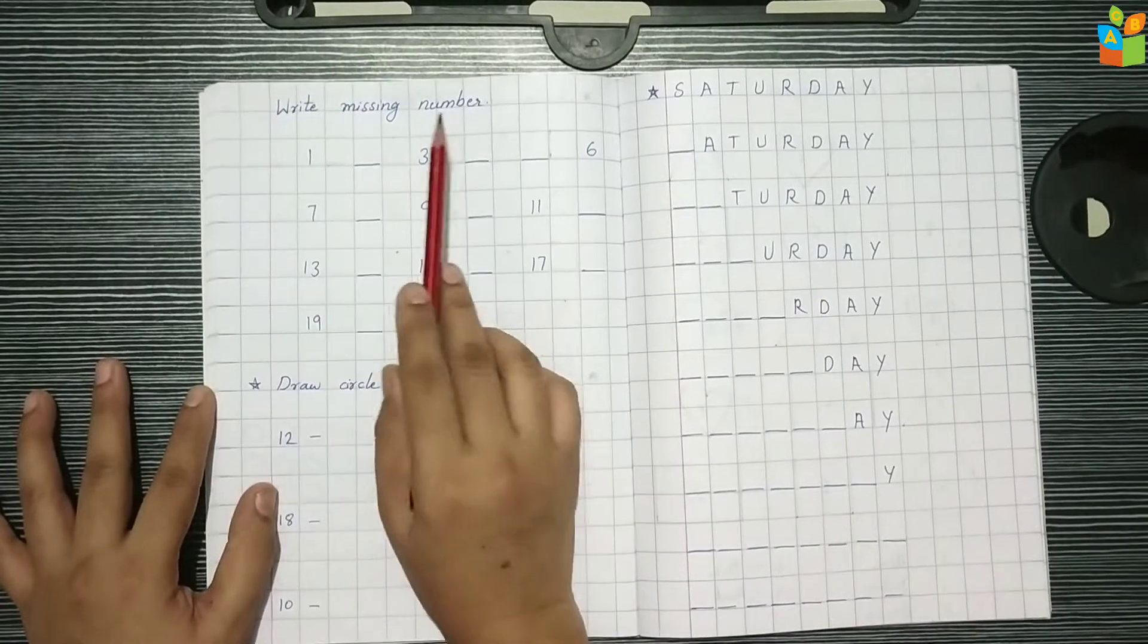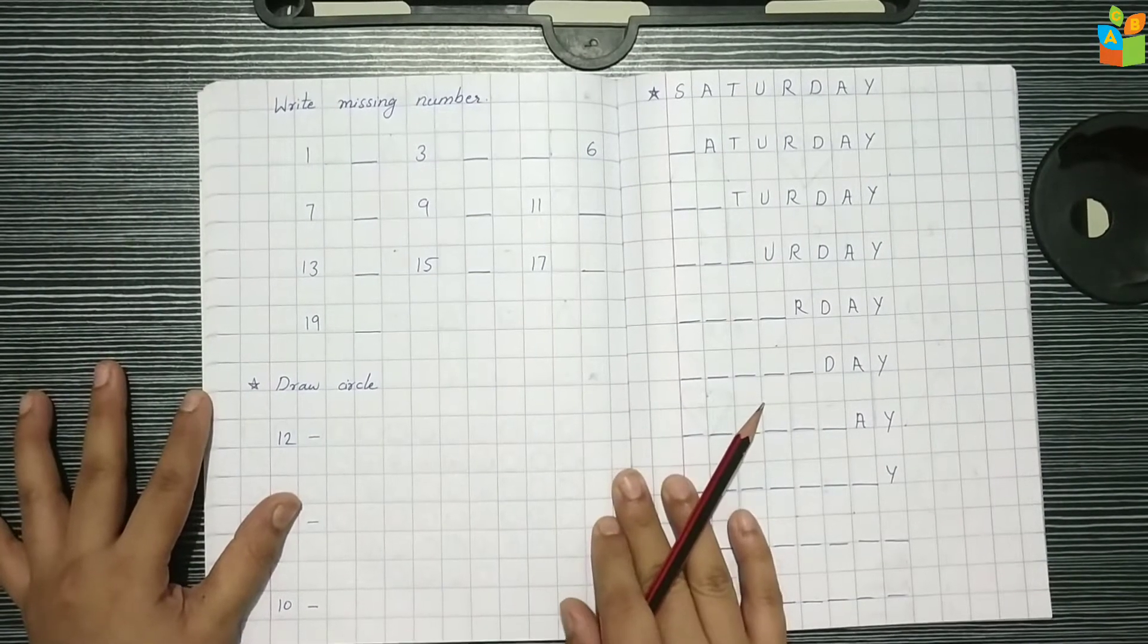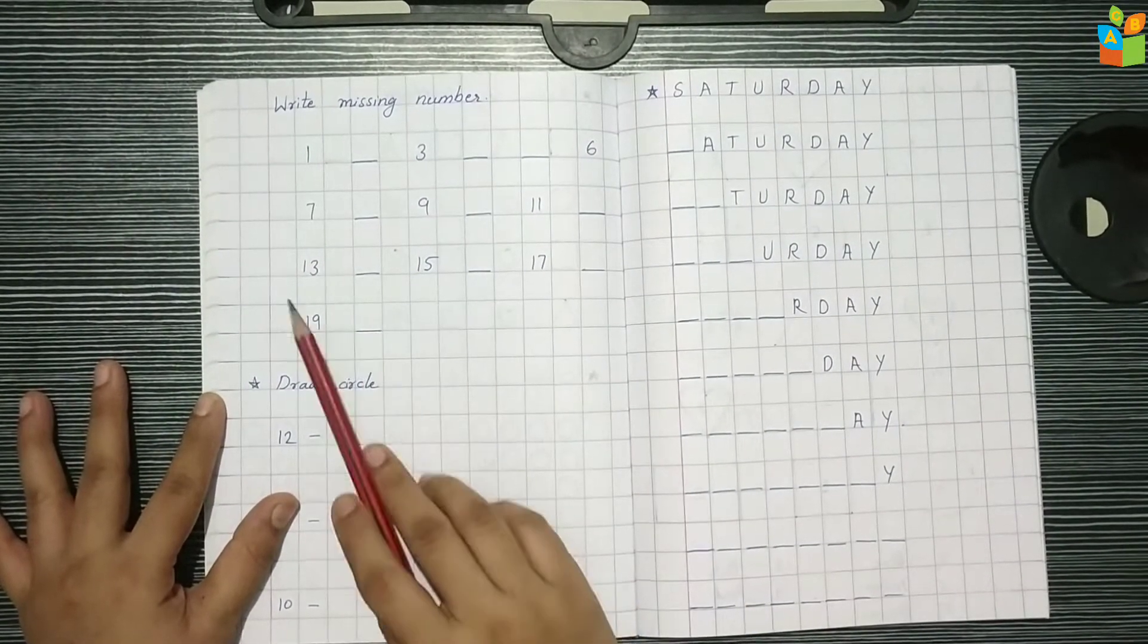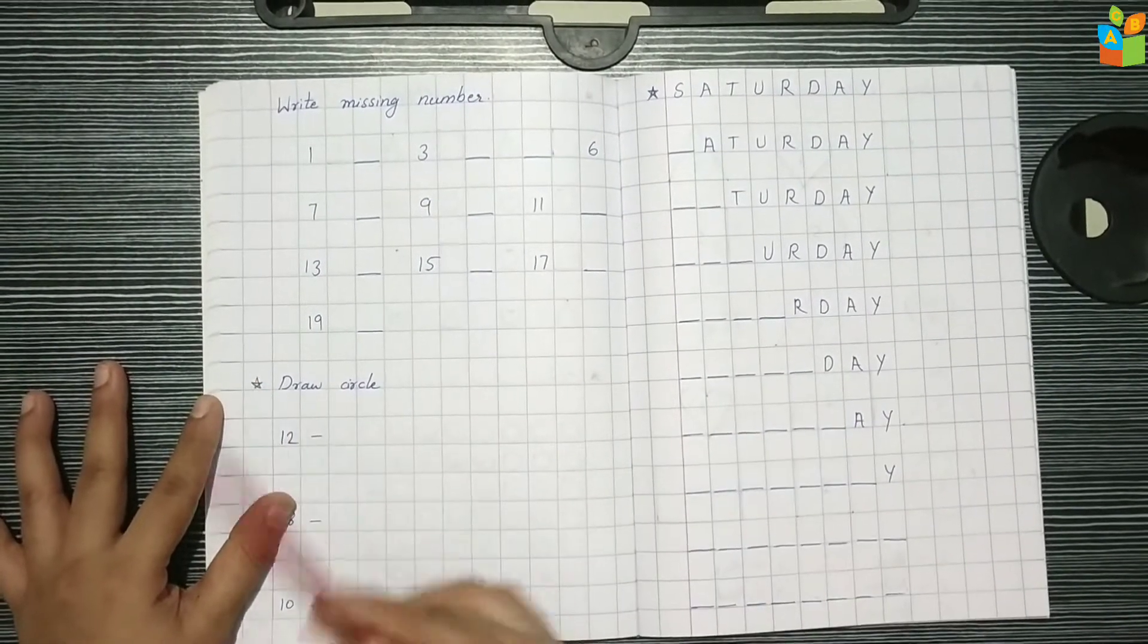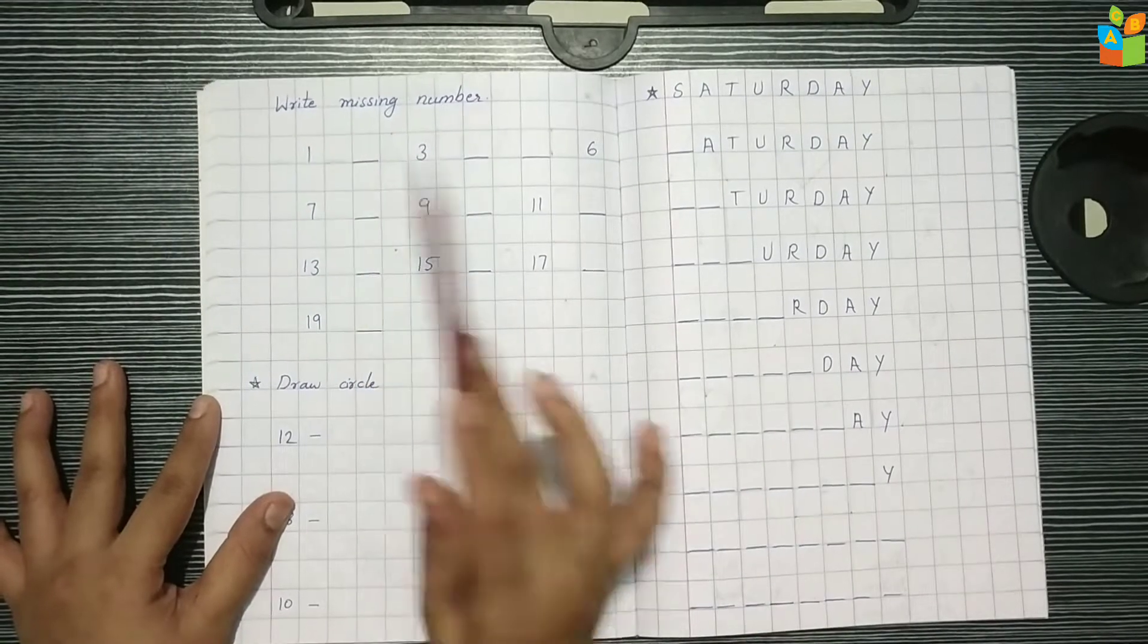In Maths, I have put a write missing number activity here. I have written 1 to 20 numbers and there are some numbers missing. So the child has to find and write it.